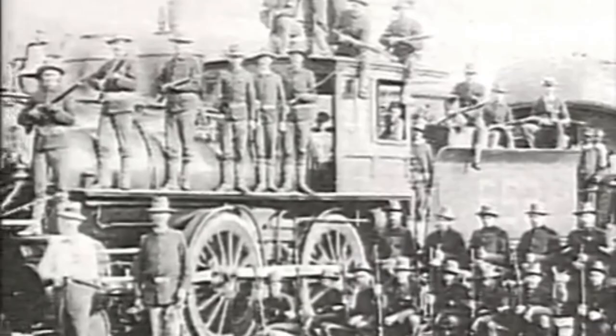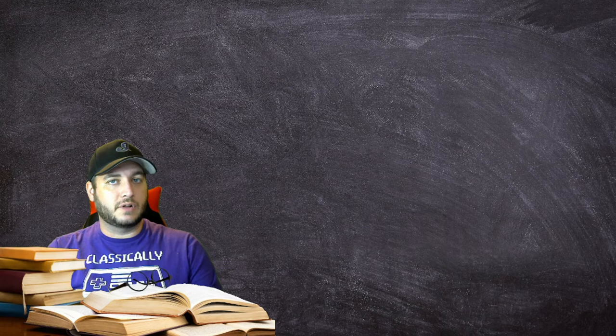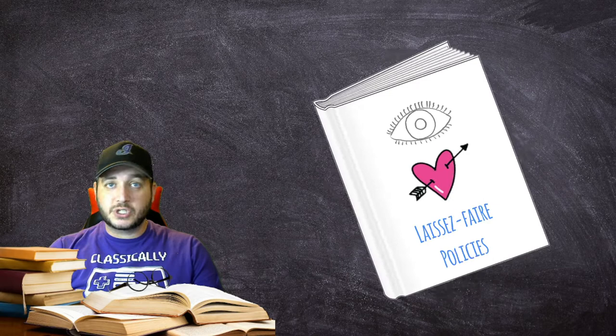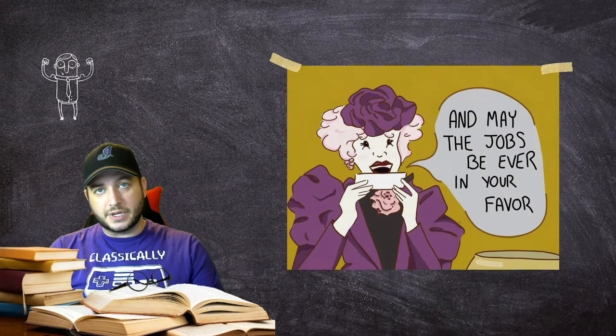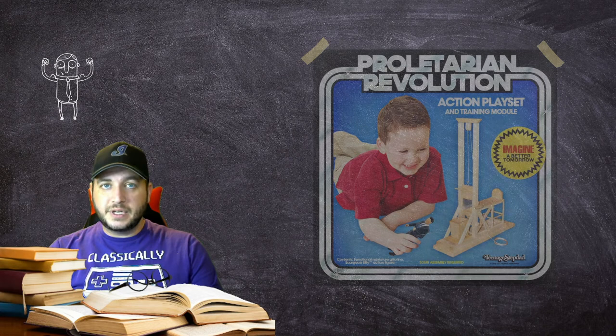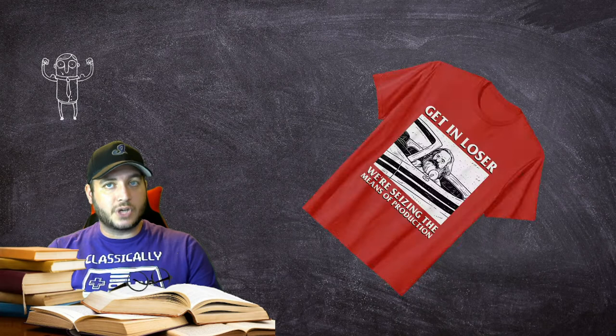The Gilded Age saw several new economic and philosophical ideologies emerge in response to the Industrial Revolution. Capitalists continued to support laissez-faire policies. Social Darwinists thought the wealthy at the top of society were simply superior to others. Communists predicted a violent proletarian revolution would overthrow the wealthy and create a more egalitarian society where property was held in common. Socialists also desired social change but sought to achieve it through peaceful means. Anarchists opposed all forms of organized government.